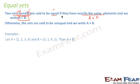Let's take some examples. A is {1, 2, 3, 4} and B is {3, 1, 4, 2}. Then we say A is equal to B. Why? Because we know that in roster form, the order doesn't matter.